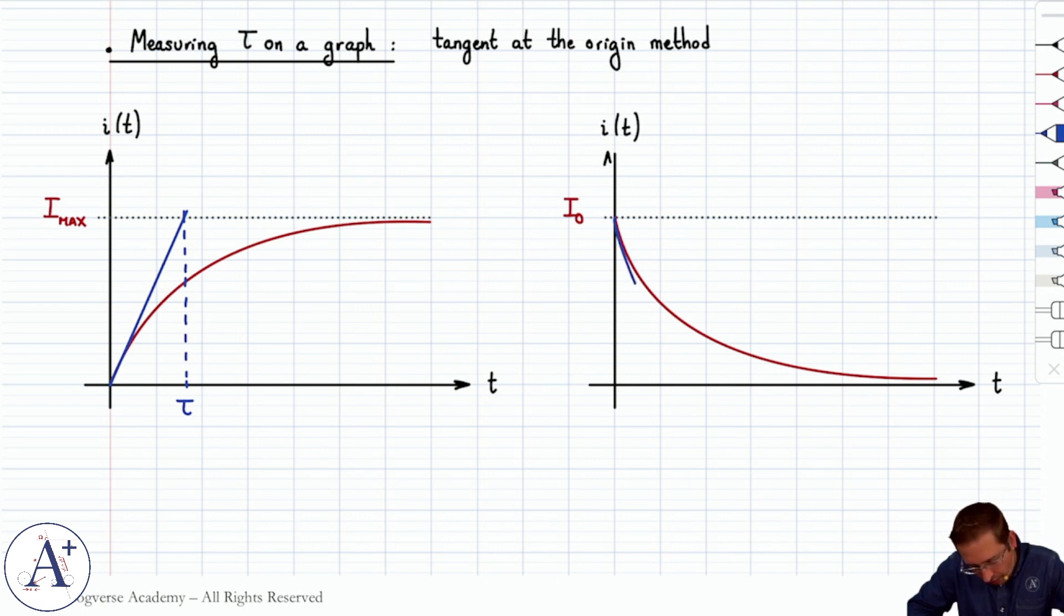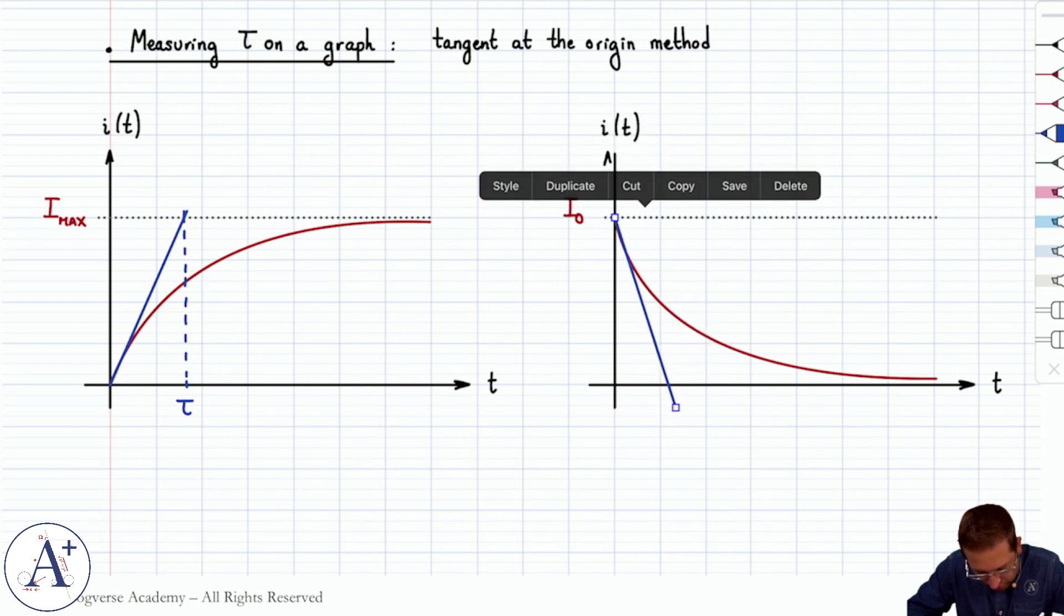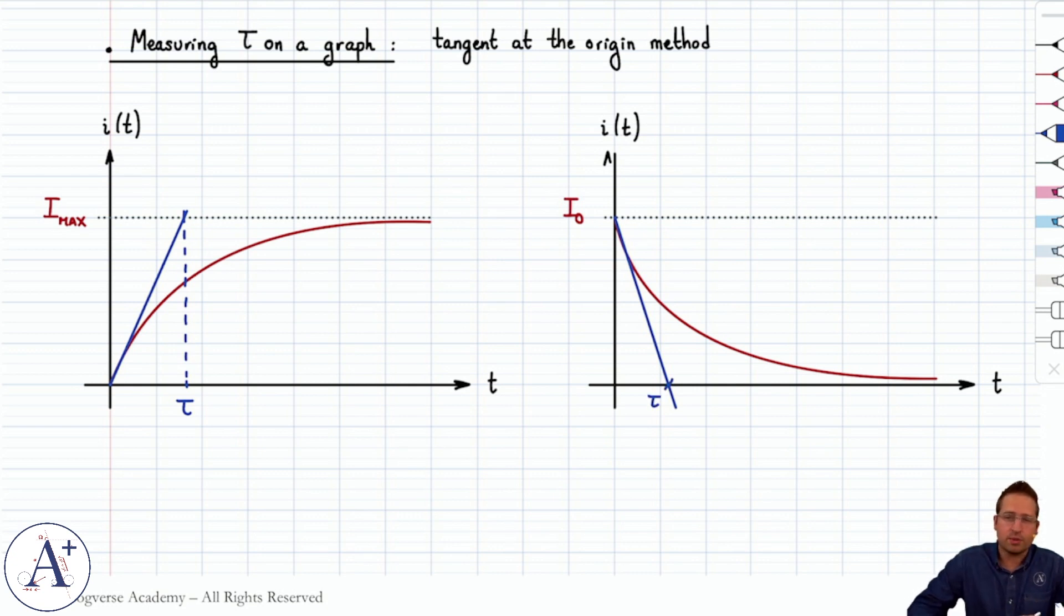Same idea for a falling current, except it's a little easier to draw because all you have to do is reach the horizontal axis, and it will intersect here at T equals tau.